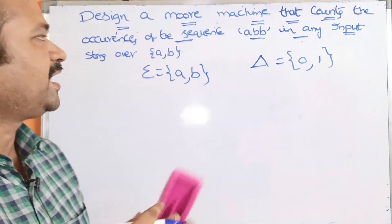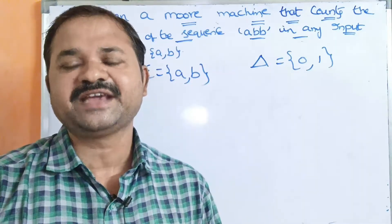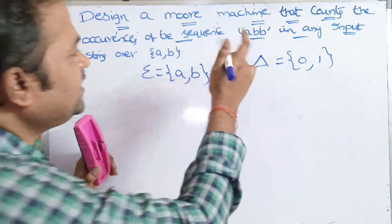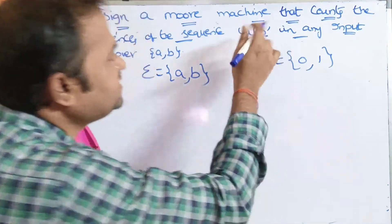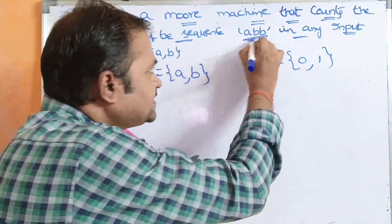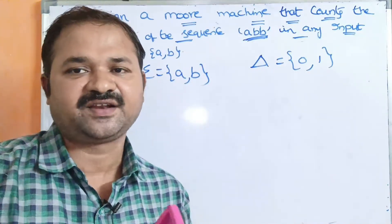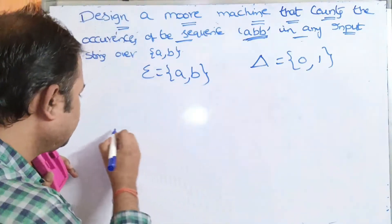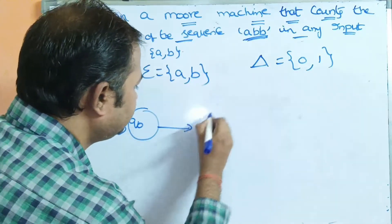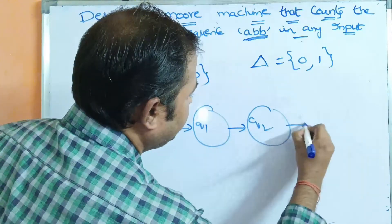Now we have to construct the DFA. A Moore machine is constructed by building a DFA. Here the sequence ABB contains three symbols, so the size of ABB is 3. Therefore the DFA contains 3 plus 1, which is 4 states total. The states of the DFA are Q0, Q1, Q2, and Q3.